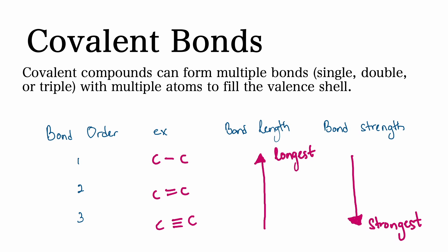An example of this is carbon. As you can see, as the bond order increases, the bond length decreases, and the bond strength increases.